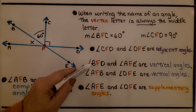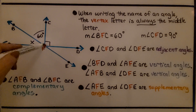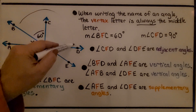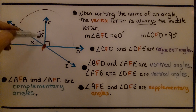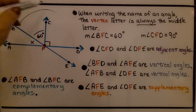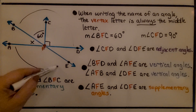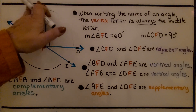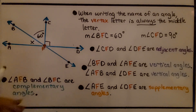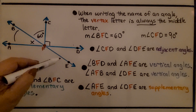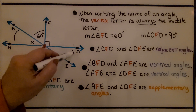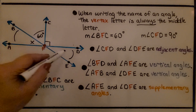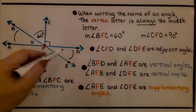Angle BFD — that's this large angle — and the angle across from it are vertical angles; they're opposite each other. Angle AFB and angle DFE are also vertical angles — they're across from each other, which means they have the same measure.